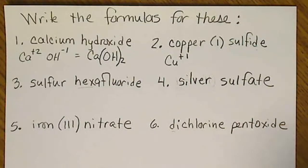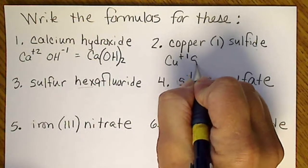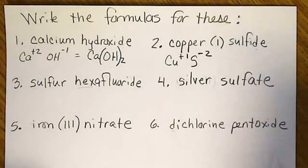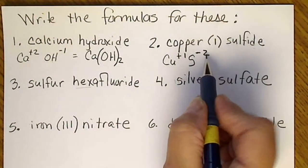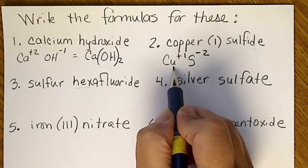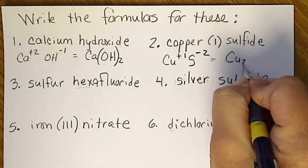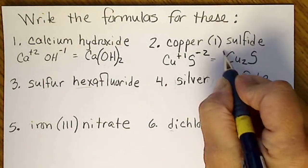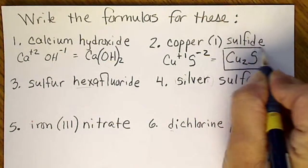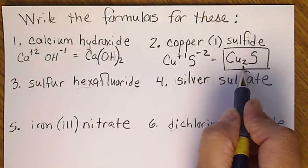So sulfur is a -2, so this formula we're going to require two copper +1's for every sulfide, so we get Cu2S. Now that doesn't look like copper(I) sulfide because of the 2, but the Roman numeral is the charge, it's not how many atoms there are.